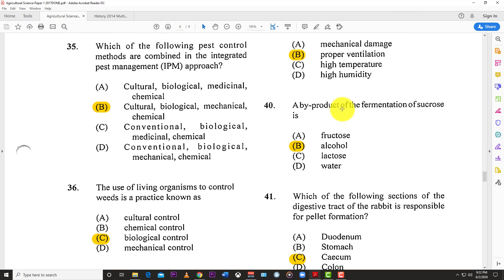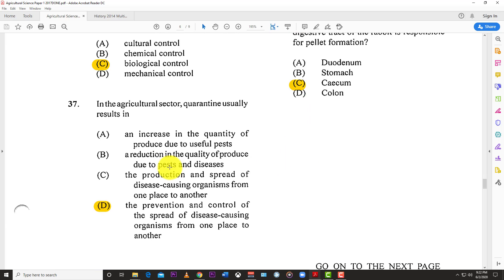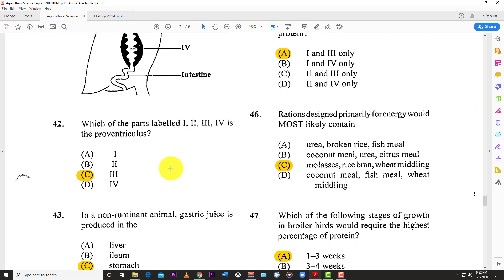Number thirty-nine: Spoilage of stored foods is not caused by proper ventilation. Number forty: A byproduct of fermentation of sucrose is B, alcohol. When you ferment sugars, you create alcohol.